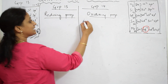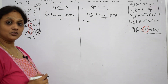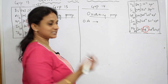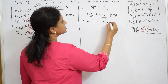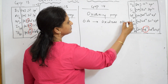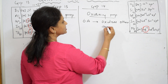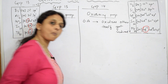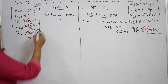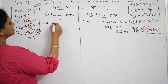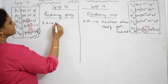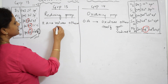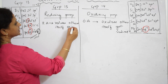What do I mean by an oxidizing agent? An oxidizing agent is something which oxidizes others and itself gets reduced. A reducing agent is the reverse — it reduces others and itself gets oxidized.